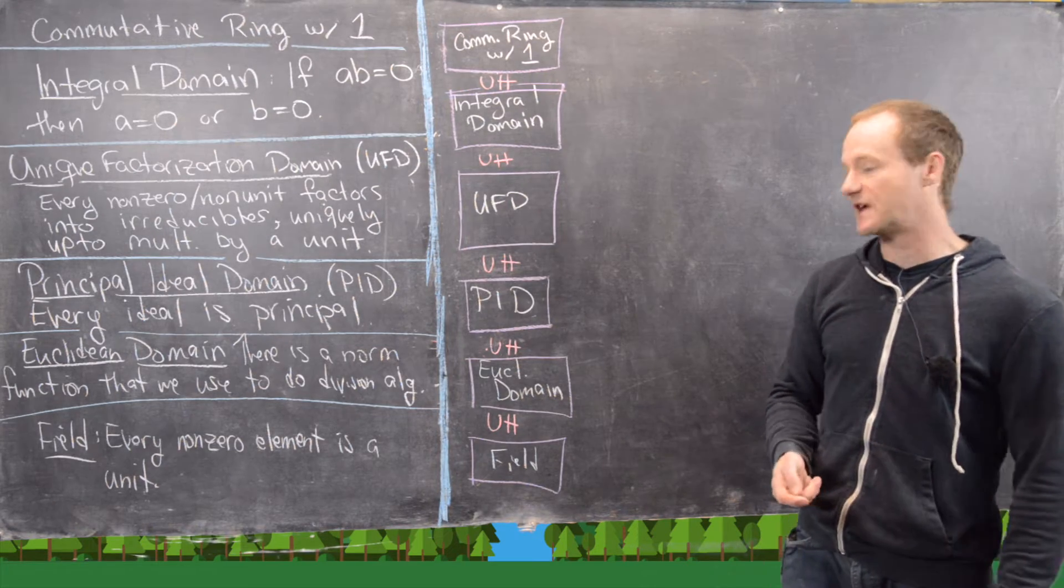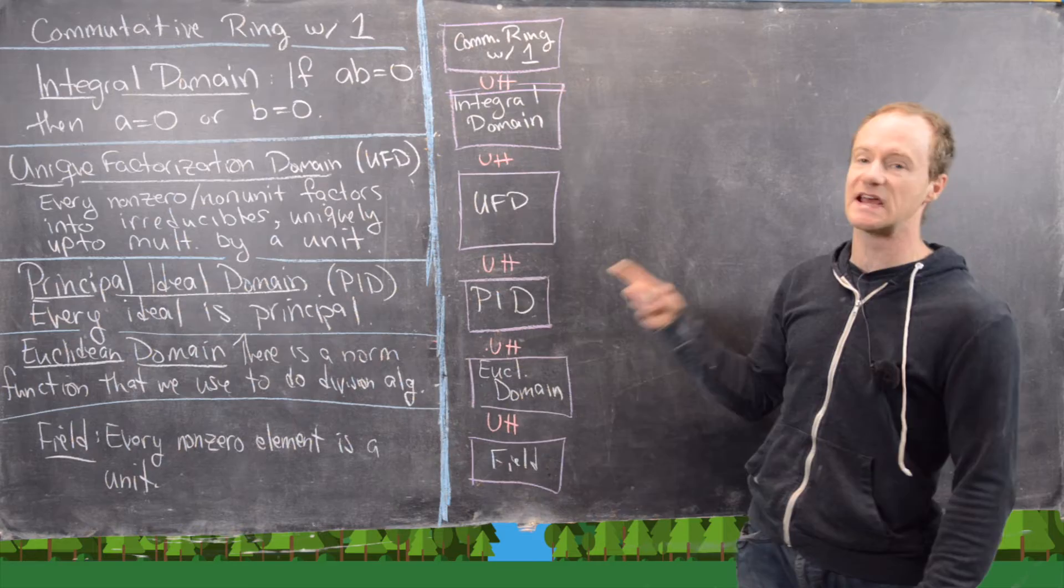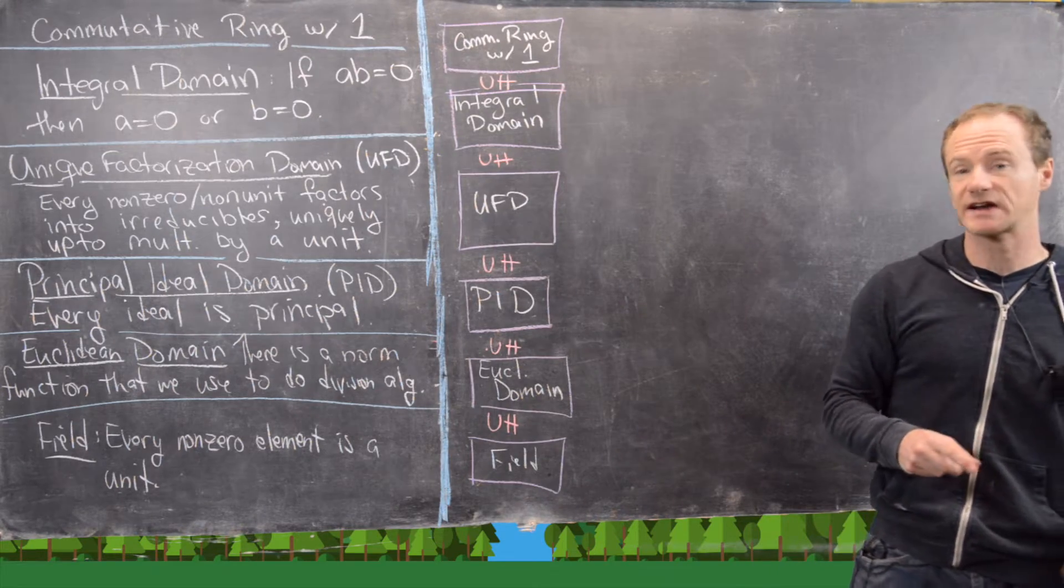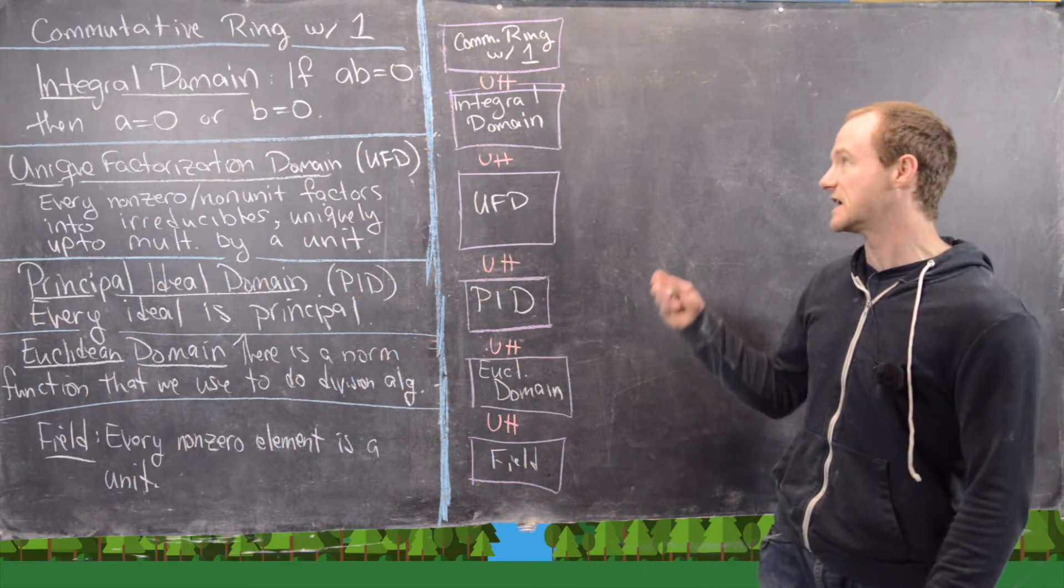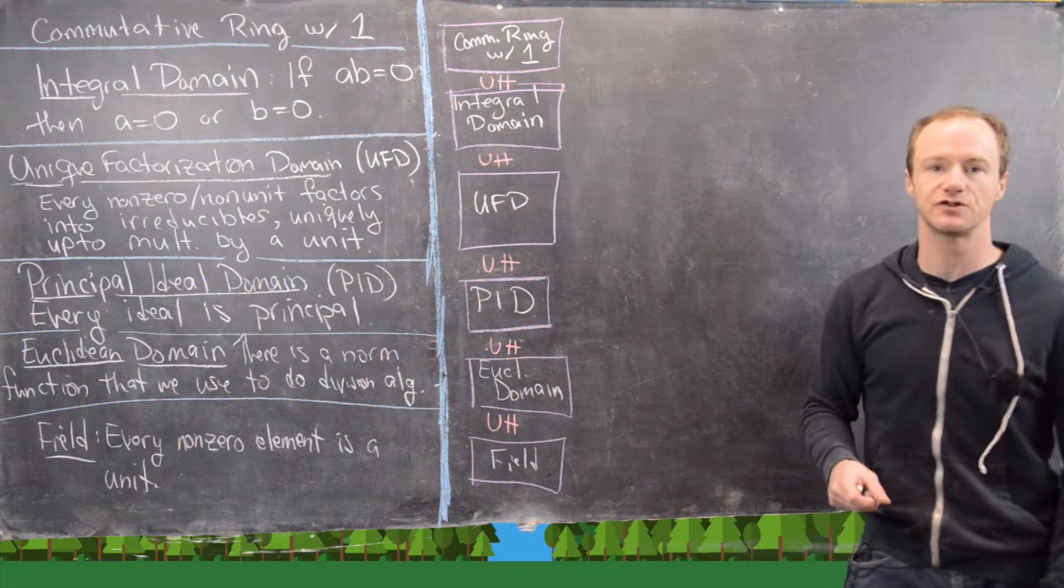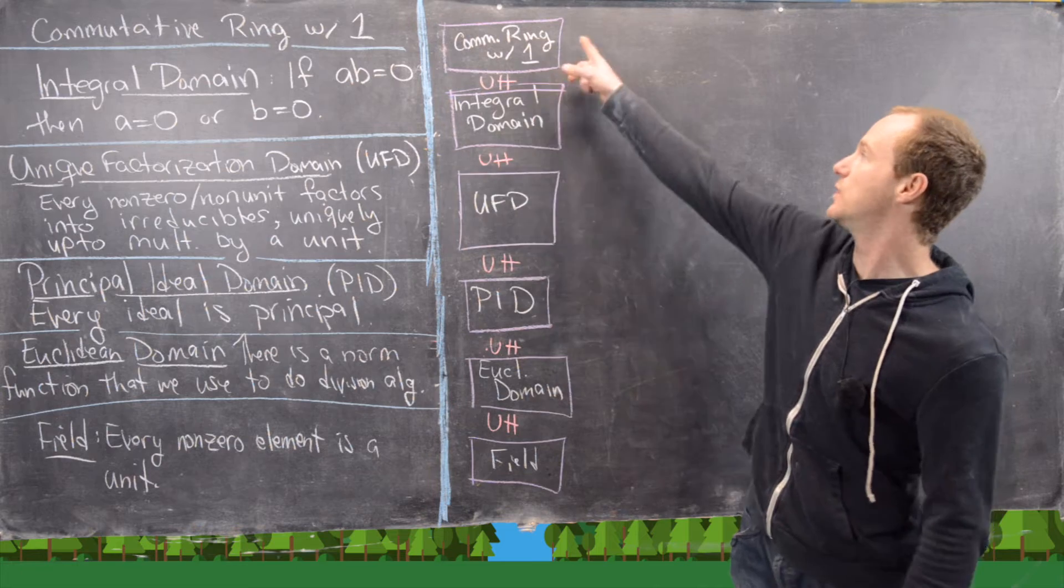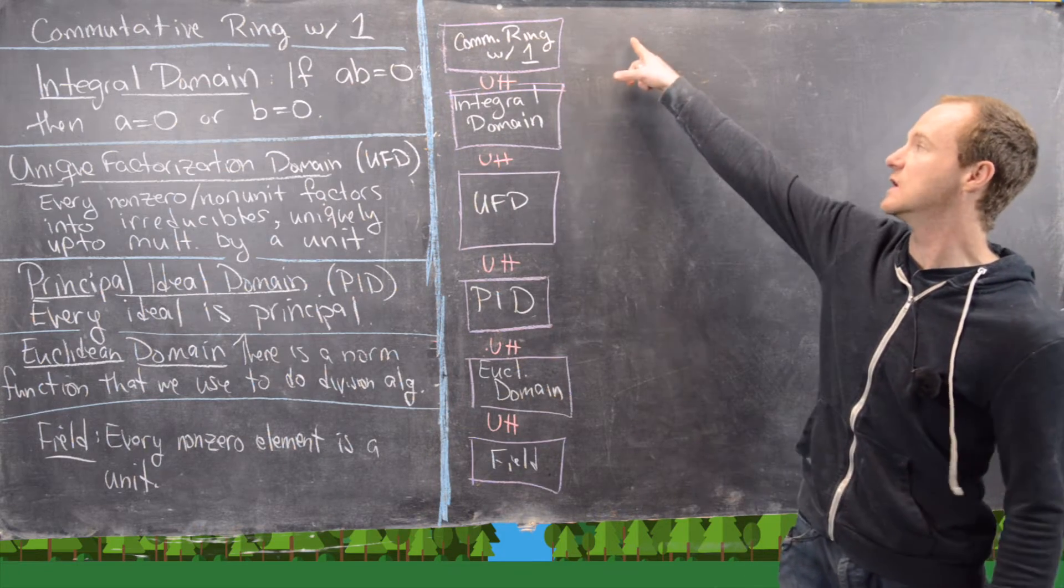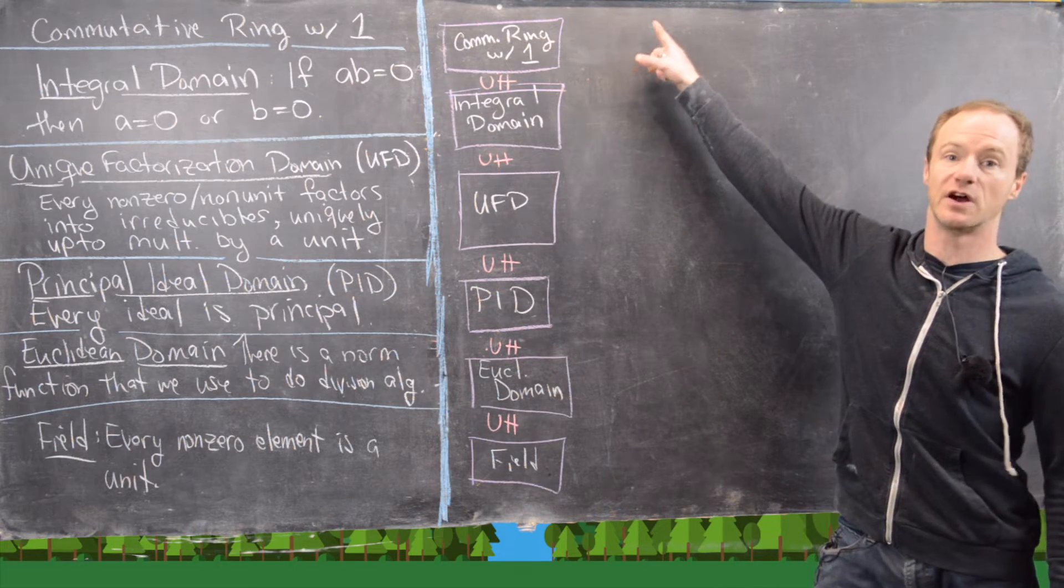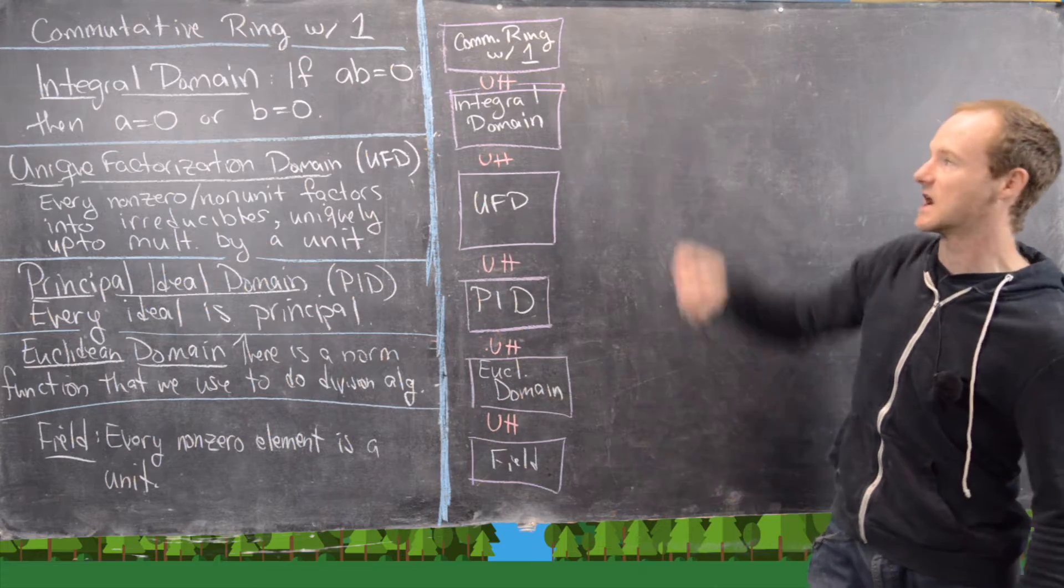So now maybe the interesting thing here is to show that these containments are strict. In other words, we can find examples of commutative rings with one that are not integral domains and so on and so forth. So let's go ahead and do that. We'll put those kind of next to each one.